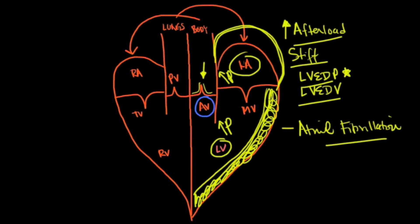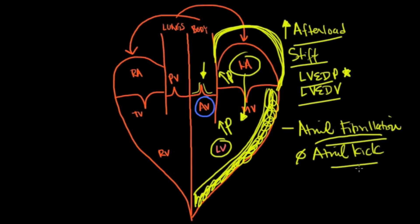If the left atrium becomes enlarged, something called atrial fibrillation can occur. This is important because a stiff left ventricle depends heavily on atrial kick — the contraction of the atria just before ventricular contraction — to push a bit more blood into the ventricle. In atrial fibrillation, P waves disappear on the EKG and atrial kick is lost, causing cardiac output to drop precipitously.